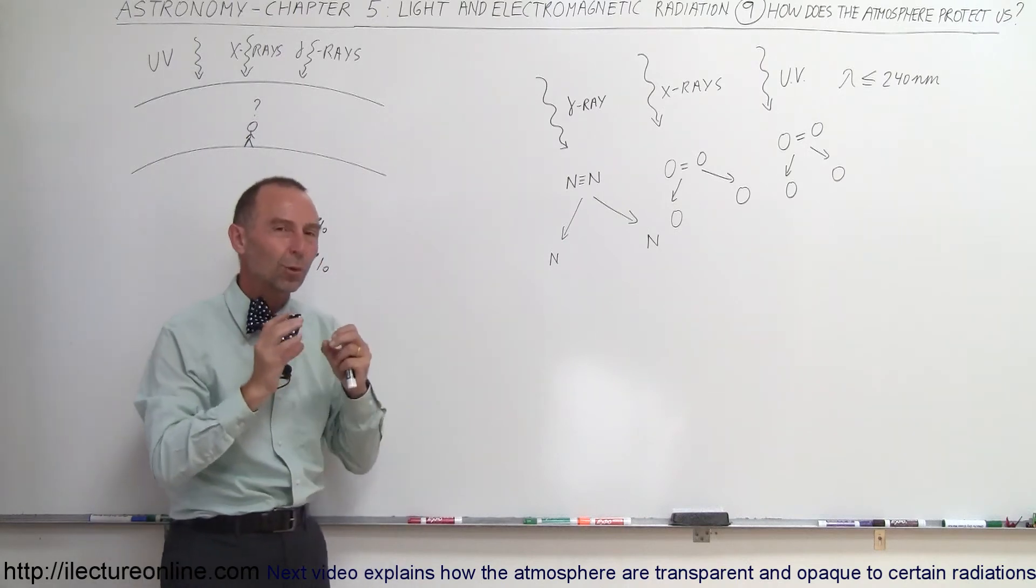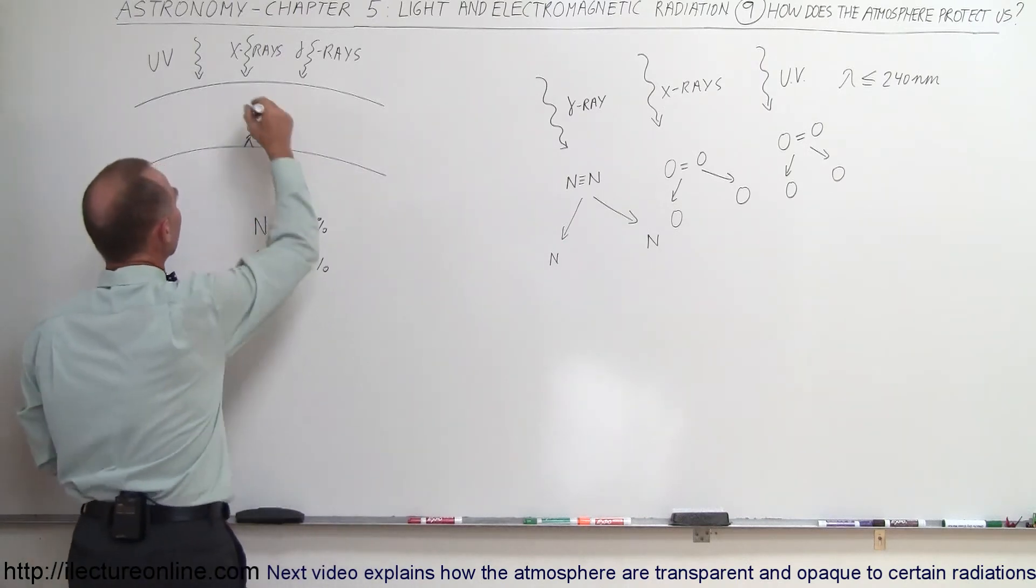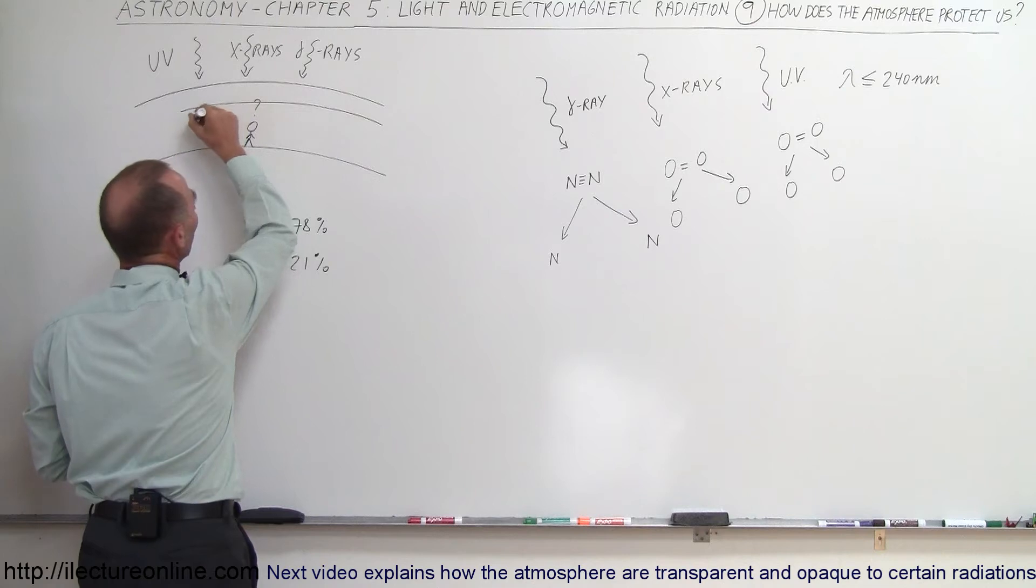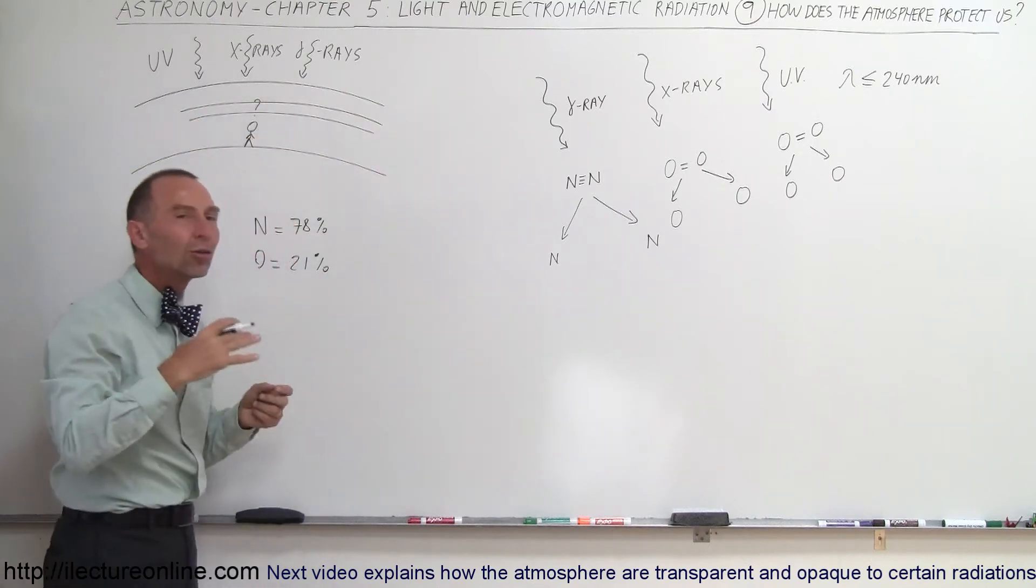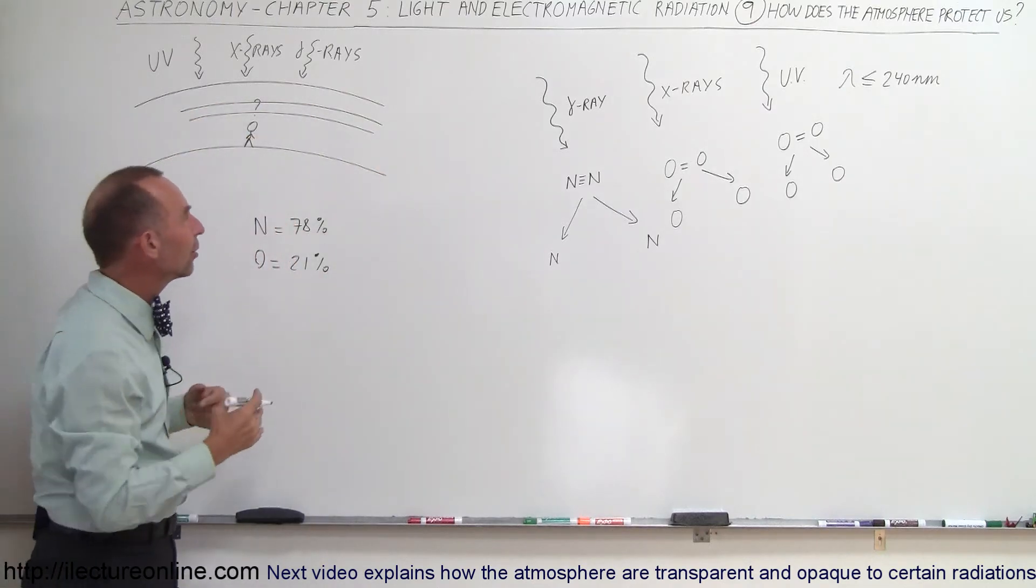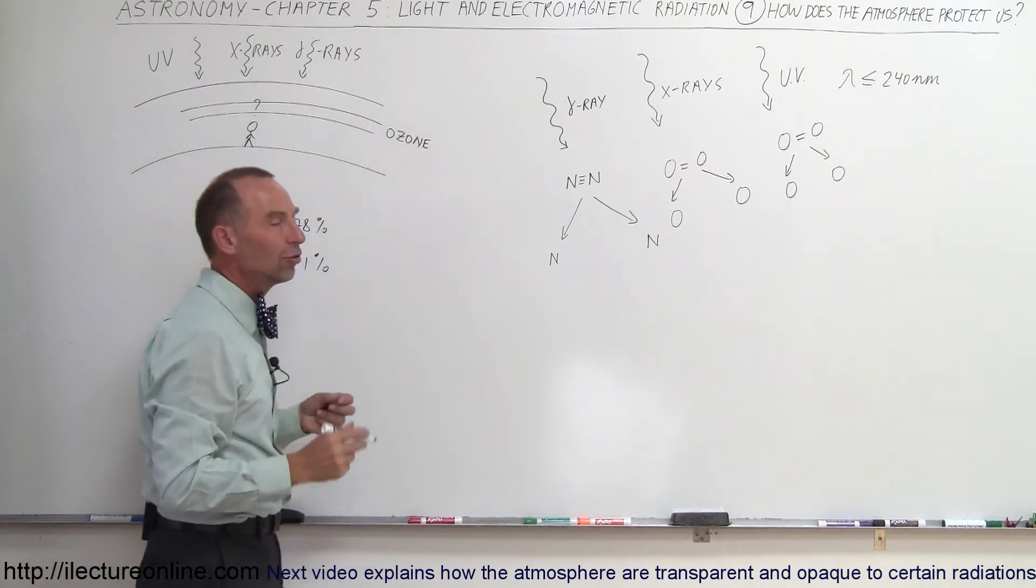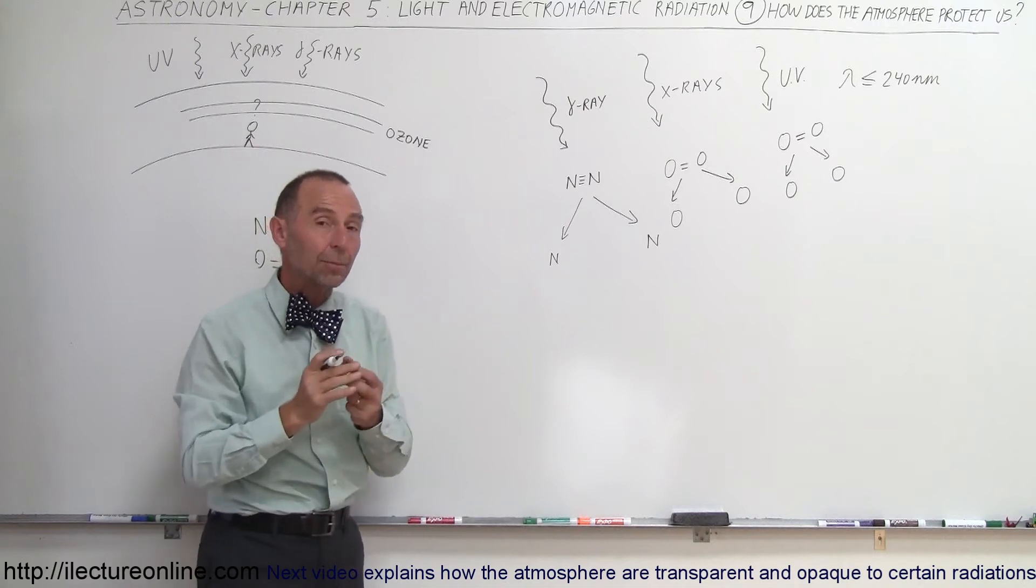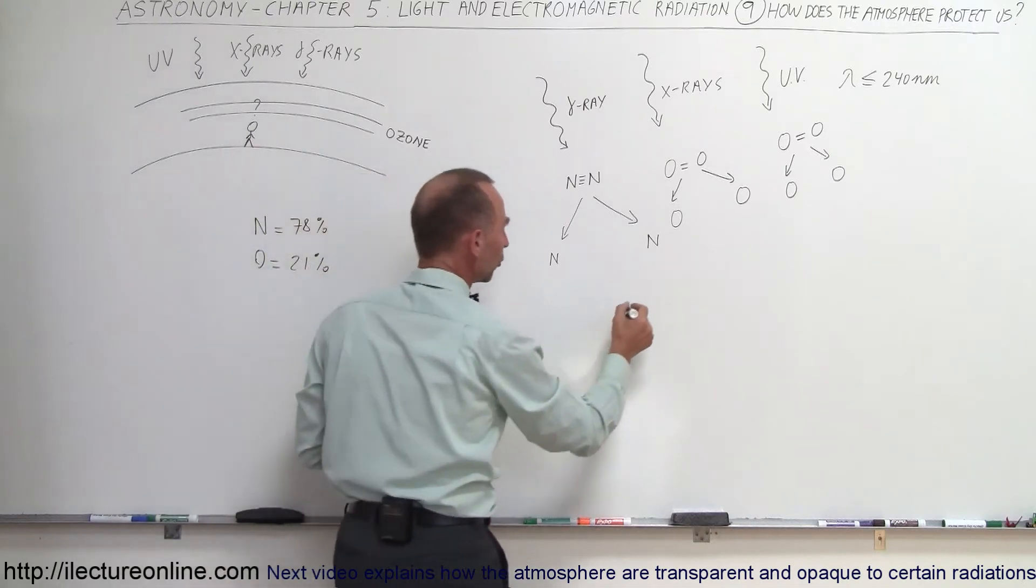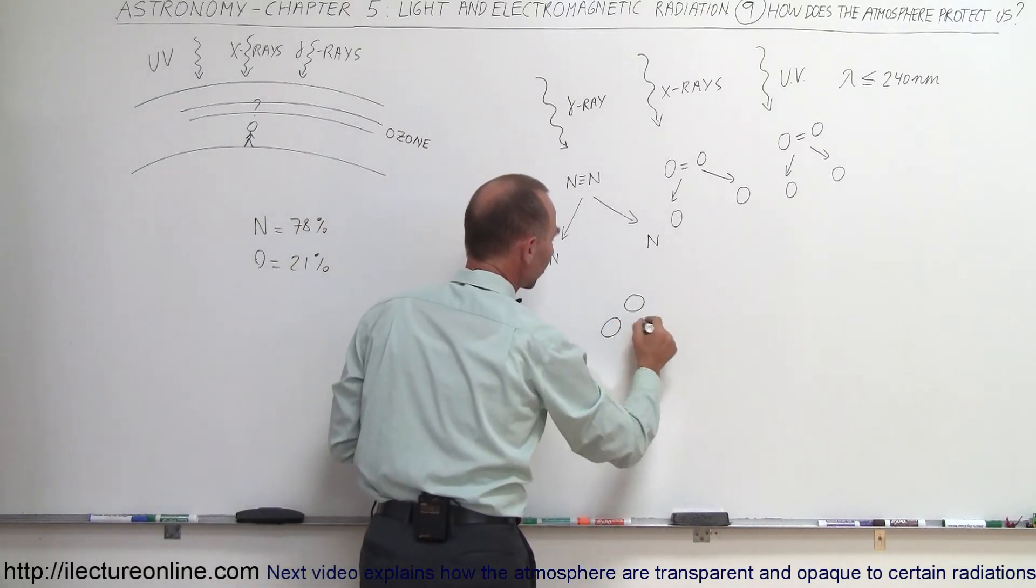Lucky for us, there's one more layer of protection in the atmosphere. It's high up in the atmosphere, somewhere in the neighborhood of maybe 30 or so miles up from the Earth. We have what we call an ozone layer there. The ozone layer is oxygen, but not in a diatomic molecule, but a triatomic molecule. An ozone molecule looks like that, connected like that.